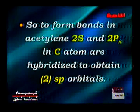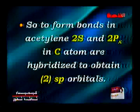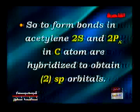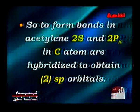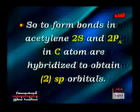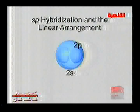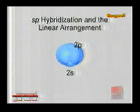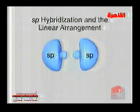Then, to form the bonds in acetylene, the 2s and 2px orbitals in the carbon atoms are hybridized to obtain two equivalent orbitals. Each one is called an sp orbital, as the following animation shows. Here the carbon atom has 2s atomic orbitals containing one electron, and 2px atomic orbitals also containing one electron. They are mixed together to form two hybrid orbitals equal in energy, each called an sp atomic orbital.